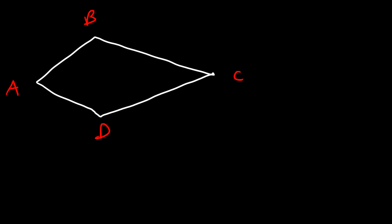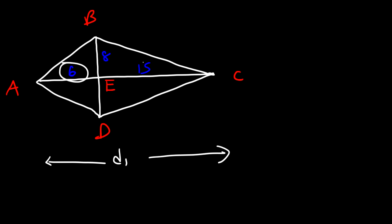Now let's look at a second example. Label the kite A, B, C, D with diagonals drawn and intersection point E. AE equals 6, BE equals 8, and EC equals 15. We need to calculate both the area and the perimeter of this kite. For the area, D1 is AC, which is 6 plus 15, so D1 equals 21 units.